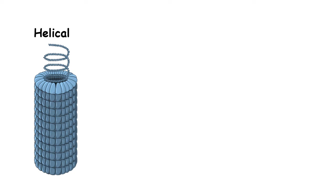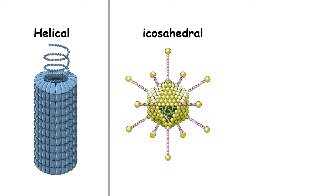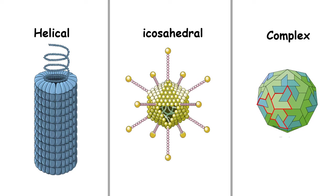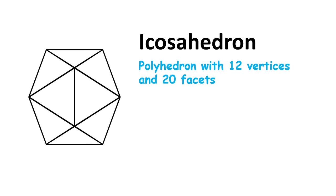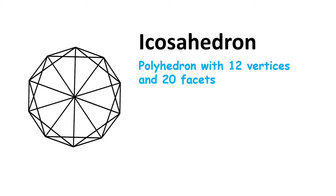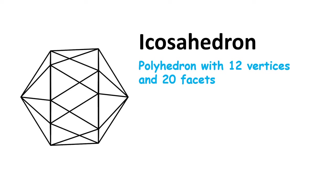Viruses have different types of capsids with different shapes and sizes, and these capsids can be classified based on their symmetry. For example, in tobacco mosaic virus we see a helical organization of the capsid, which is classified as helical capsid symmetry. There are other capsid symmetry types such as icosahedral — for example, adenoviruses have this kind of symmetry. The icosahedron is a polyhedron having 12 vertices and 20 facets, so icosahedral symmetry simply means the capsid has 20 faces.